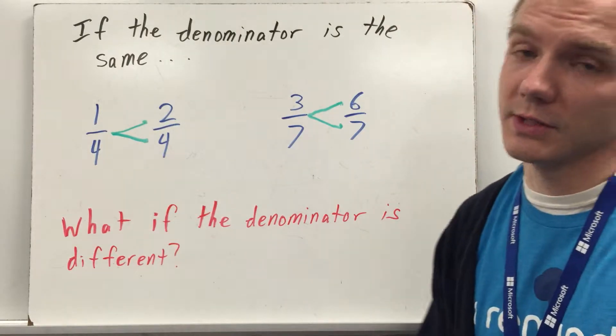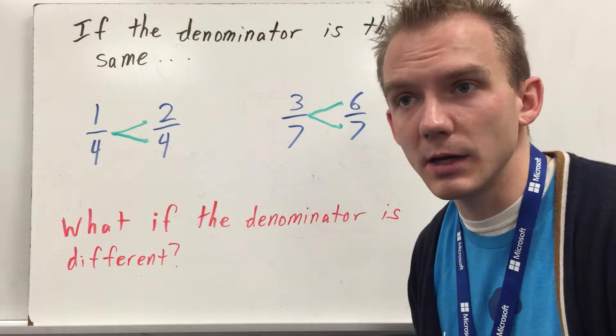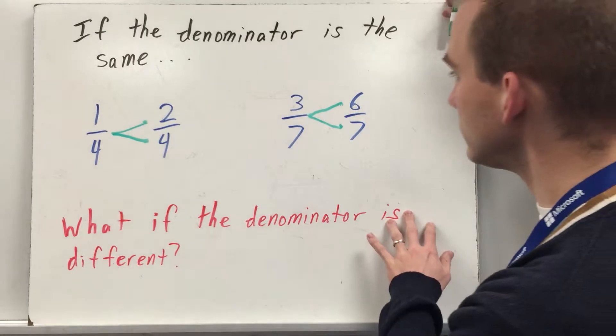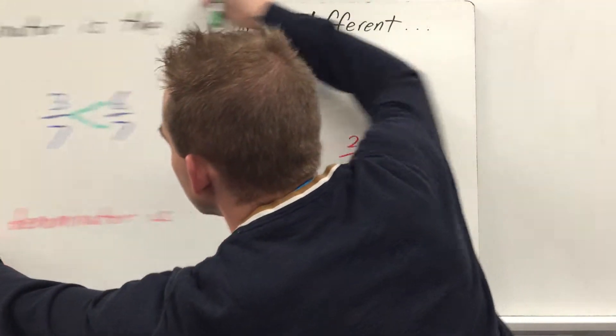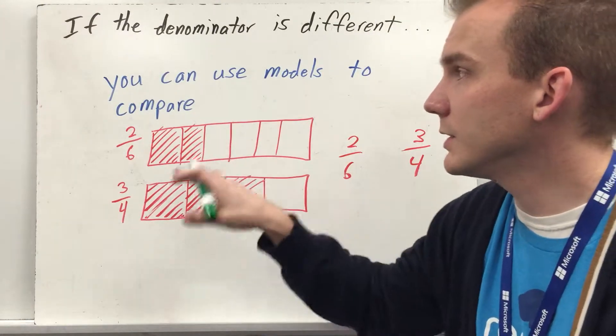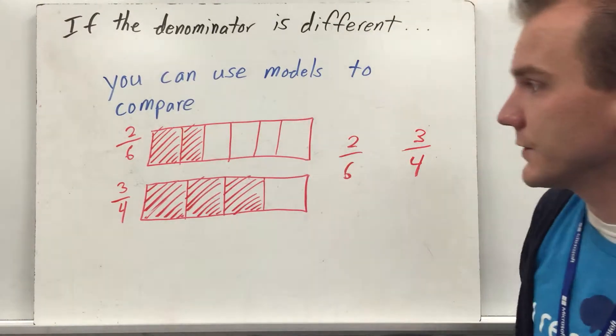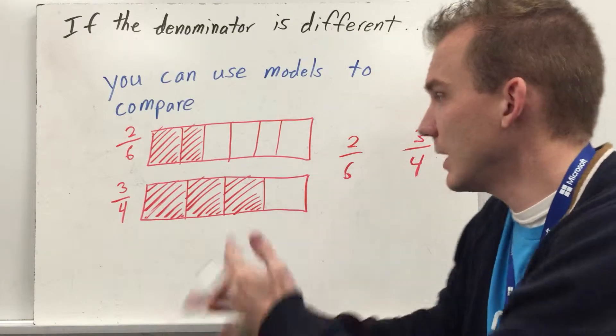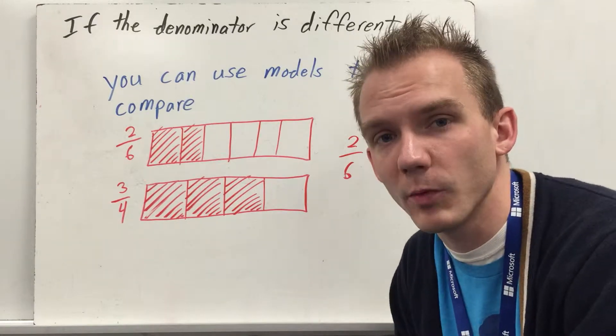What if the denominator is different? That's where it gets challenging. So if the denominator is different, one way to do that is to use models. So you can use models to compare. There are other ways to compare fractions without models, but I'm going to first show you that way.